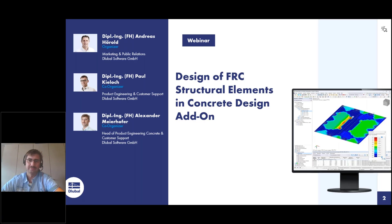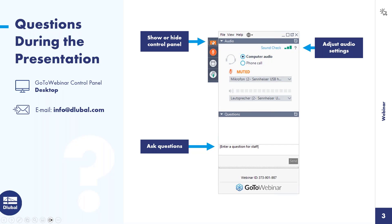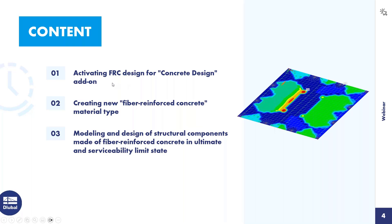Thank you for your introduction. We can switch off the webcam so attendees can see the first screen. For attendees who participate the first time, you see a control panel on the right side of your screen — you can show it with the arrow and enter questions there, which we will answer. You can also watch the full webinar and then email questions to info@luba.com. On the agenda today, Paul will activate the fiber reinforced concrete design by creating a new material type, then model and design the structural components, doing design of the ultimate and serviceability limit state.